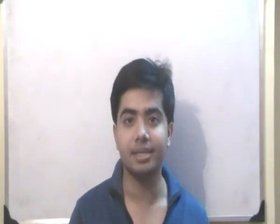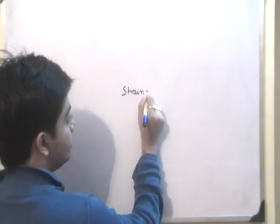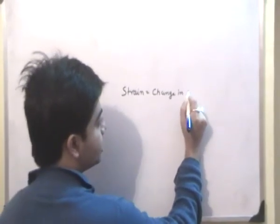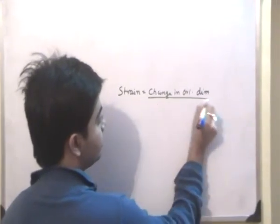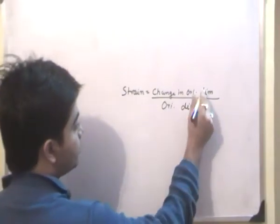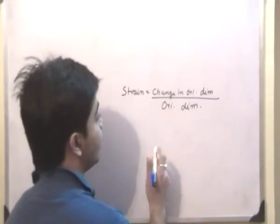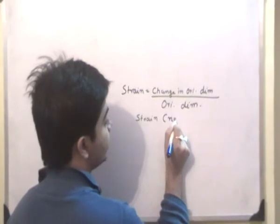Deformations are characterized by strain in strength of materials. So what is the concept of strain? The formula of strain is change in original dimension divided by the original dimension. Both of these have units of length, so they cancel out, and as such strain has no unit.